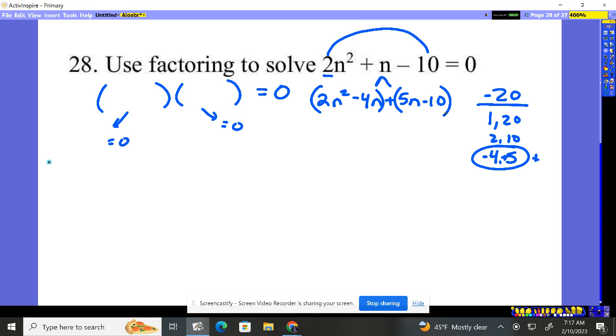2n² - 4n. What factors out? A 2 factors out number-wise, and an n factors out with the variables. 2n times n gives me 2n². 2n times -2 gives me -4n.